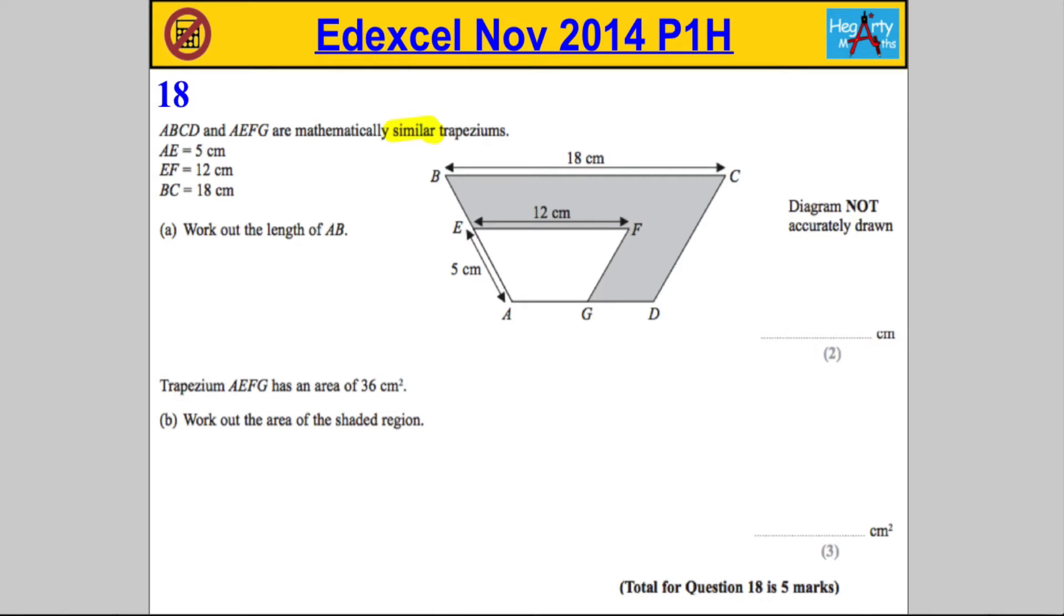We're told AE is 5 centimeters, EF is 12, and BC is 18. We're asked to work out the length of AB, so we want this distance here.